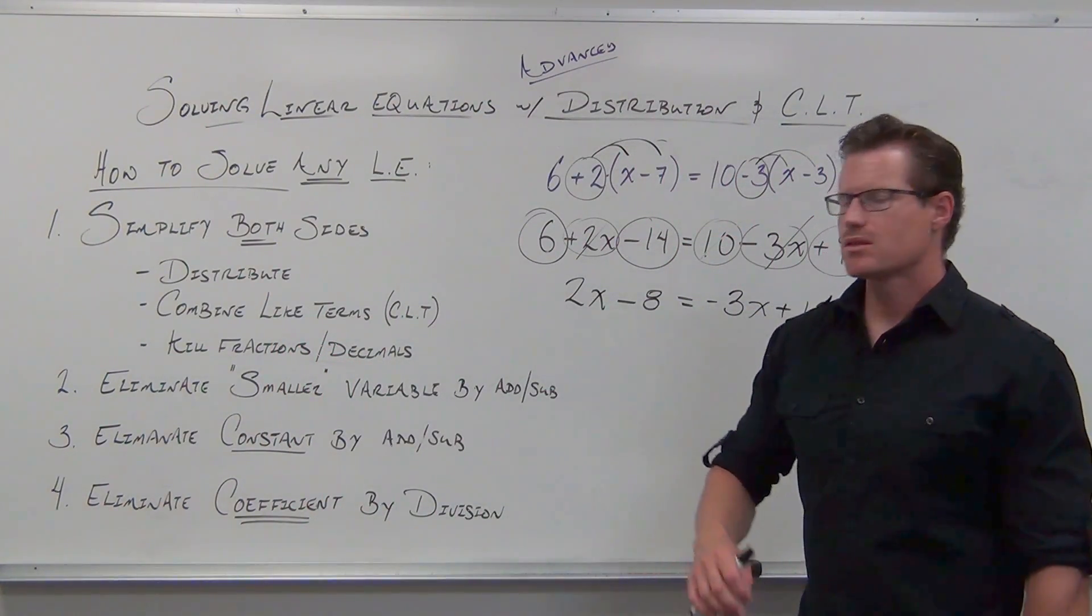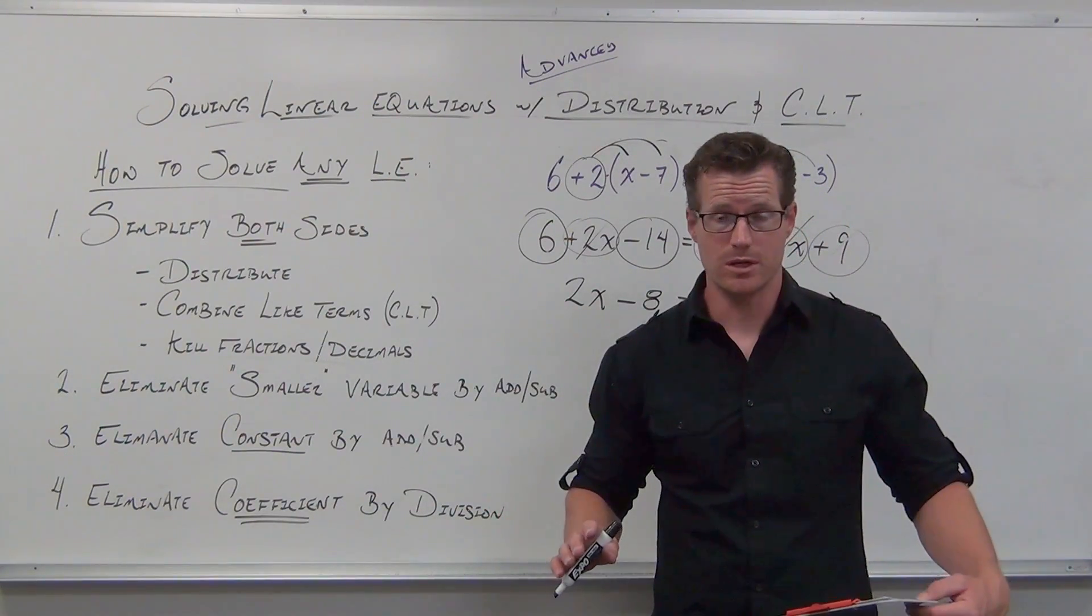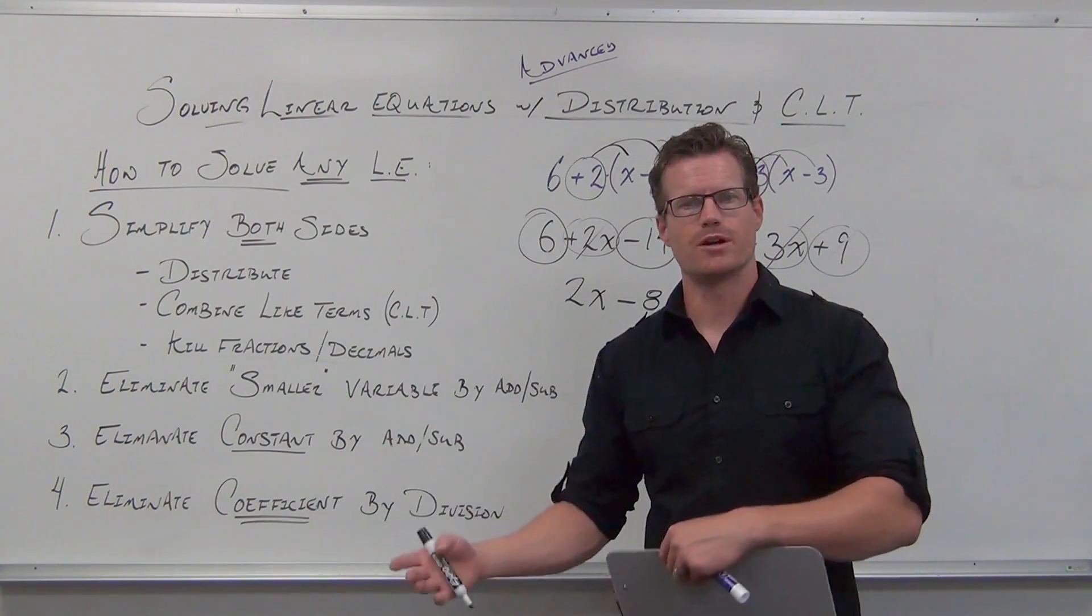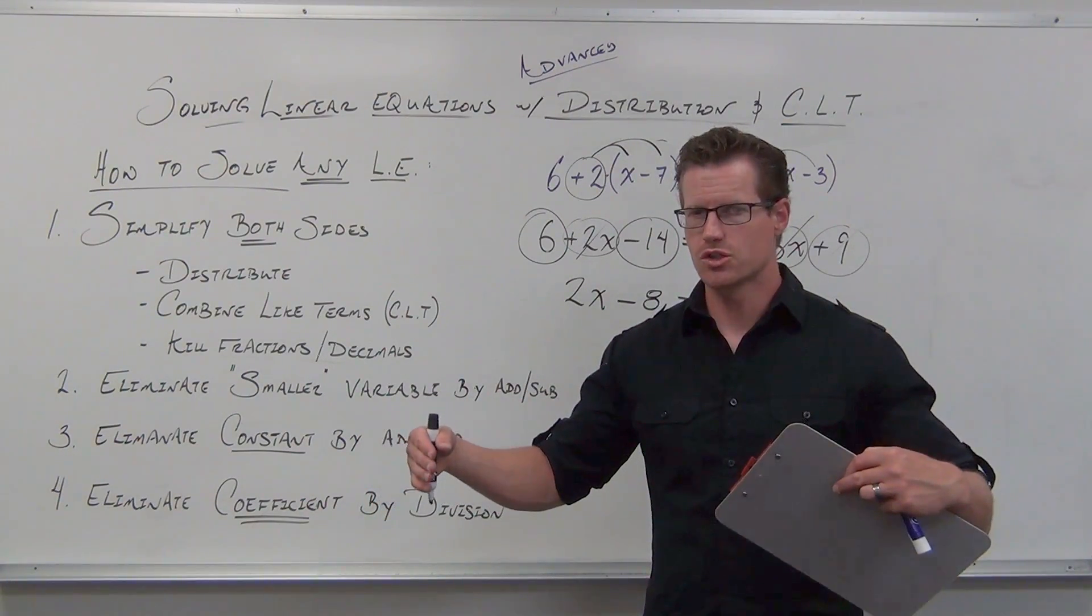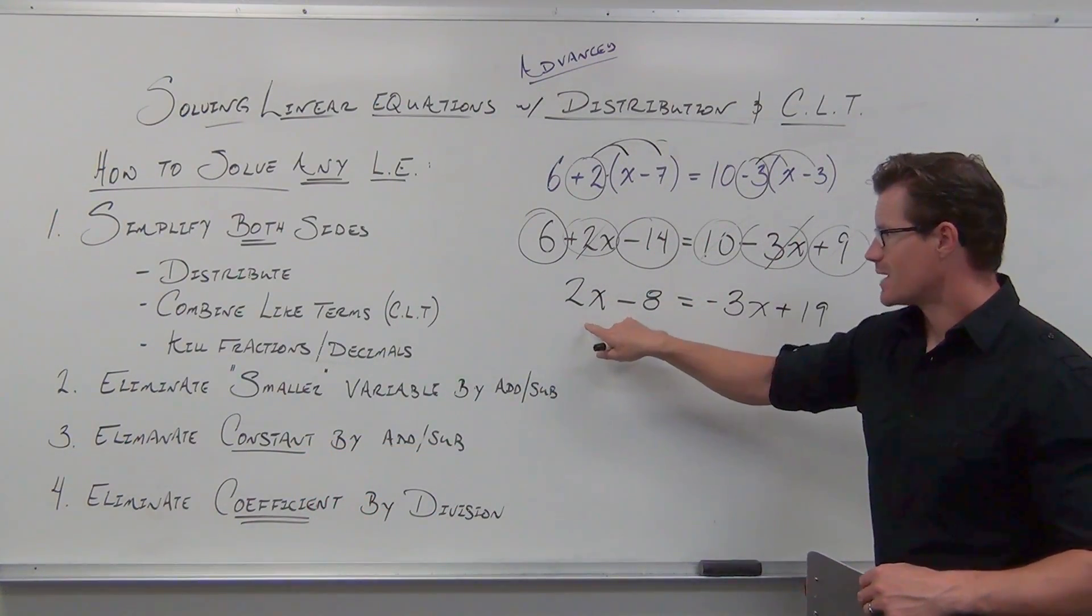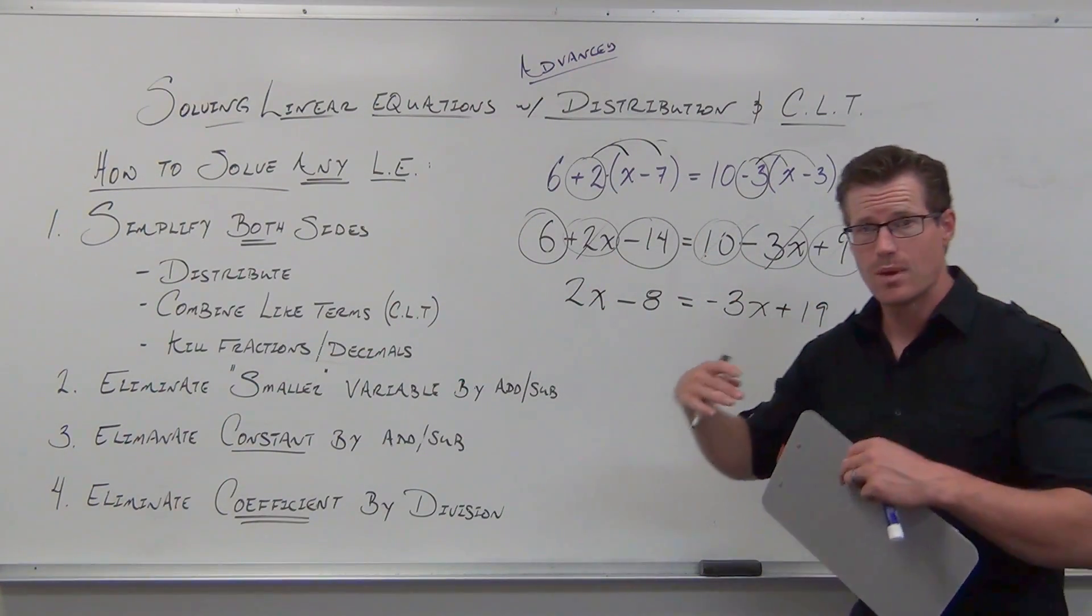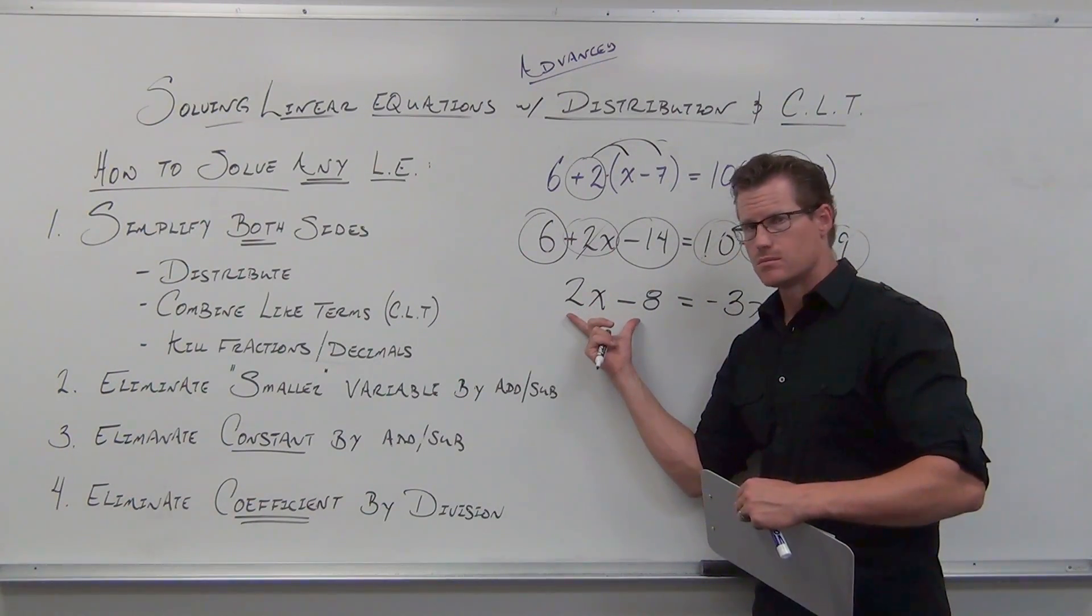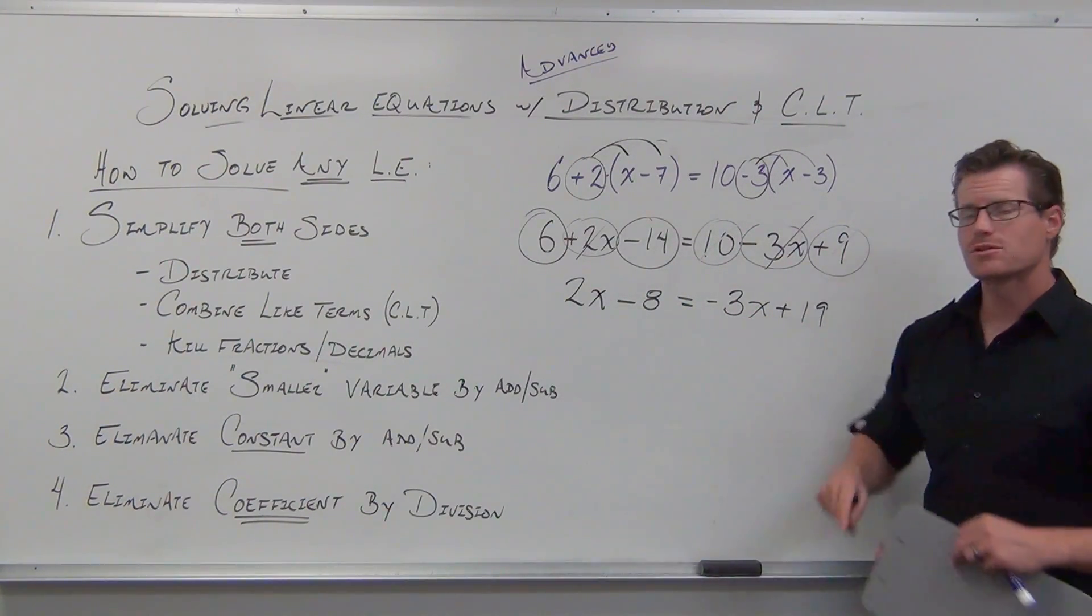Step two is eliminate the smaller variable. Now smaller, when we say smaller, we're not talking absolute value smaller anymore. We're thinking number line smaller. A positive number is always larger than a negative number on a number line. I see a 2x minus 8, simplified. I see a negative 3x plus 19, simplified. Are there like terms on this side? Are there like terms on this side? So there are no like terms.